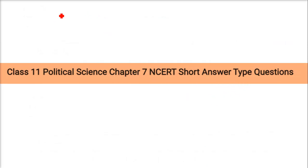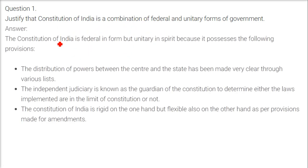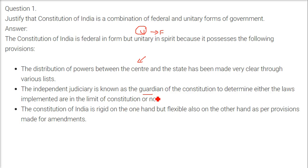Now we have short answer questions. Justify that the constitution of India is a combination of federal and unitary forms of government. The constitution is both unitary and federal. The distribution of power between central and state governments is made clear through various lists, though the centre has more power. An independent judiciary guards the constitution to determine whether laws are within constitutional limits. The constitution is rigid but also flexible as certain provisions can be amended.